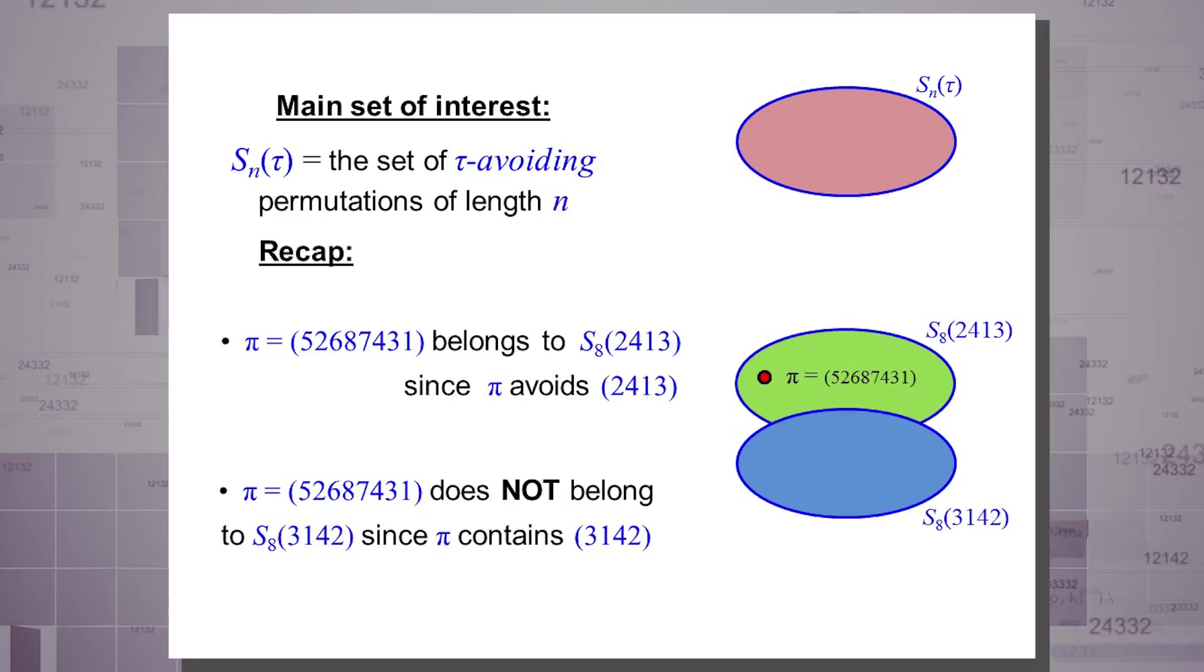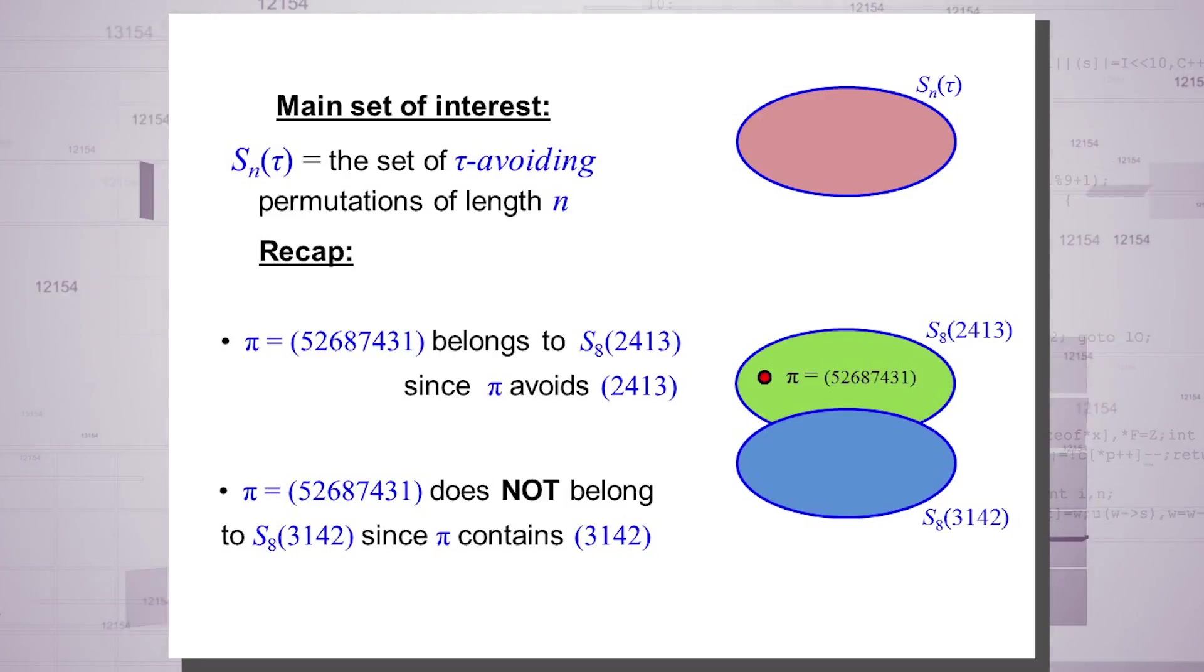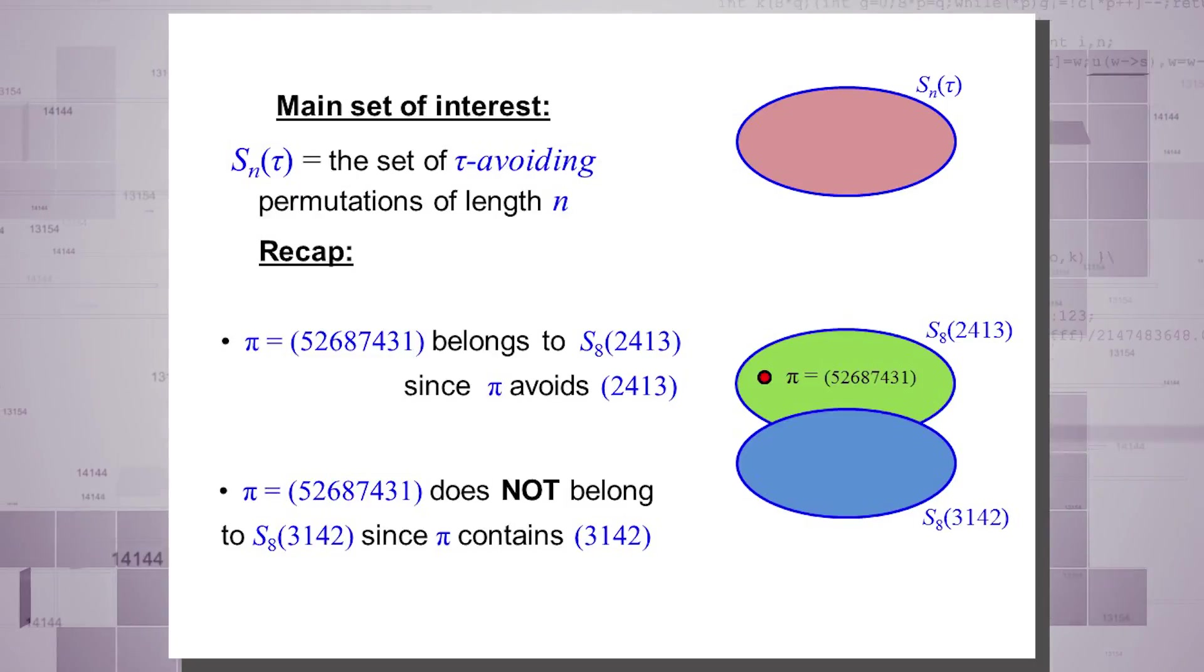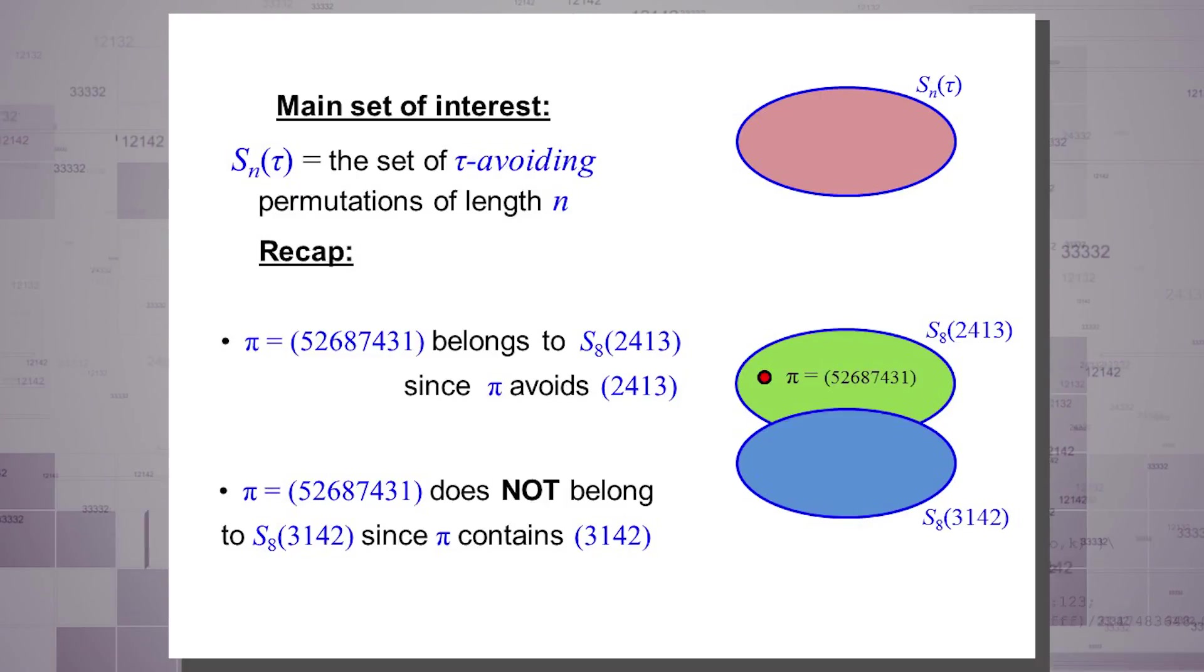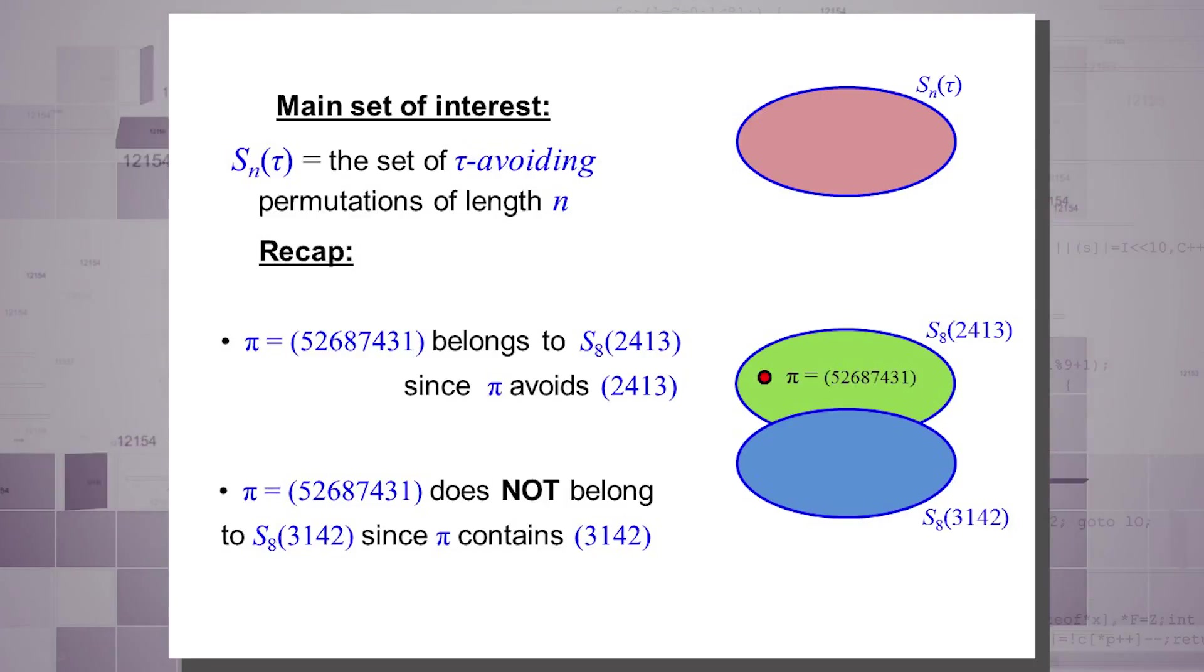So the main set of interests are S sub n of tau. Now this is a little bit of a complicated notation. So what it means is that you want to avoid the small permutation tau with big permutations of length n. So this bubble represents all permutations of length n that avoid tau. And everything outside contains tau. From our examples, this is the second example. If you want to avoid 2, 4, 1, 3, here is the set of permutations of length n that avoid it. Our big permutation pi is in this set because we couldn't find a sub-pattern 2, 4, 1, 3 inside here. However, the first example, if you want to avoid 3, 1, 4, 2, our permutation pi refuses to be inside here because it actually contains a sub-pattern of the same type as 3, 1, 4, 2.